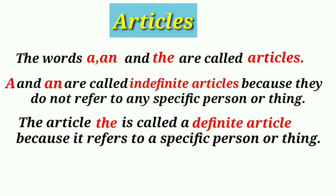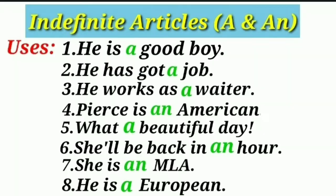A and an are called indefinite articles because they do not refer to any specific person or thing. The article the is called a definite article because it refers to a specific person or thing. The indefinite articles are used before singular countable nouns.